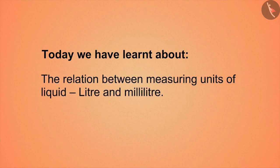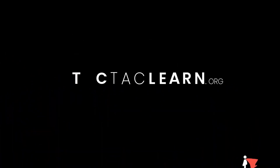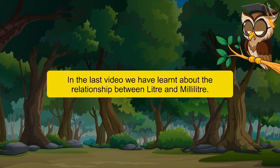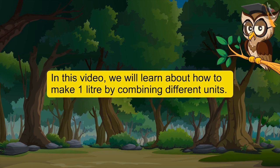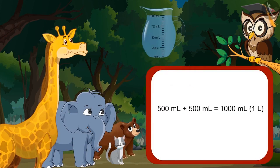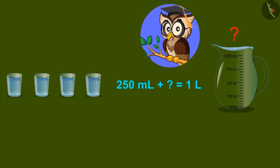Today we have learnt about the relation between measuring units of liquid: liter and milliliter. In the last video we learnt about the relationship between liter and milliliter. In this video, we will learn how to make one liter by combining different units. Do you know that mixing 500 ml twice gives one liter? Yes, sir. Are there any other units which on adding give one liter? For example, do you think glasses of 250 ml can be combined to form one liter?